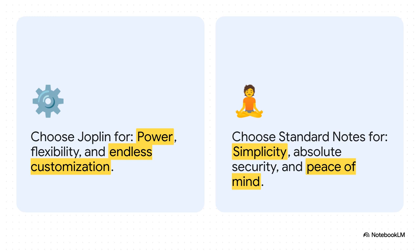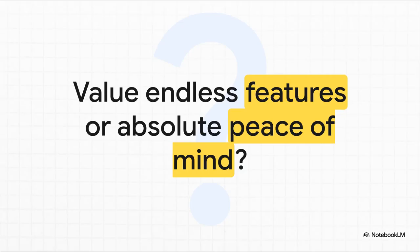Let's boil it all down to one simple choice. You choose Joplin for power, flexibility, and endless customization. You choose Standard Notes for simplicity, absolute security, and peace of mind. Do you need a workshop, or do you need a vault? There's no wrong answer here, but your choice really defines your workflow. Do you want endless features right at your fingertips, or do you want the absolute peace of mind that comes from unparalleled simplicity and security? The best choice is just the one that lets you think clearly.